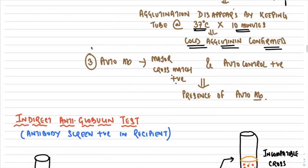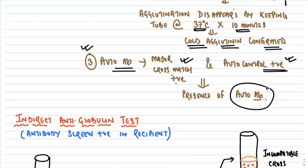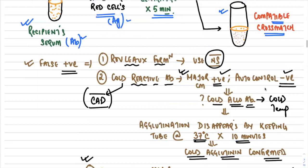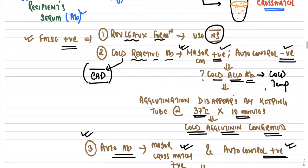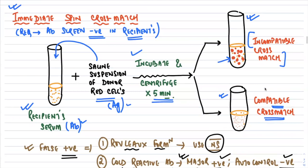The third cause of false positive cross-match is the presence of auto-antibodies. In this case both the major cross-match and the auto-control come out positive. If both are positive, it indicates auto-antibodies. Always remember these three conditions: rouleaux formation, cold reactive antibodies, and auto-antibodies.